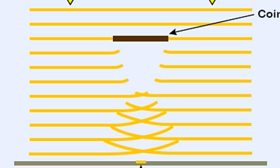Diffraction is the spreading of light when it passes through a narrow opening or around an object.